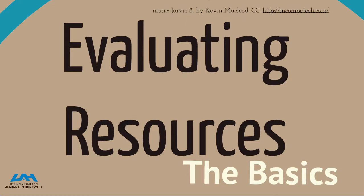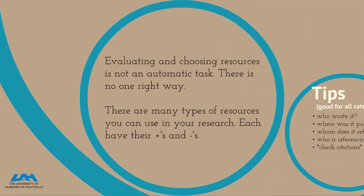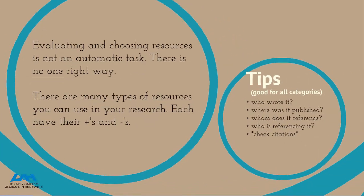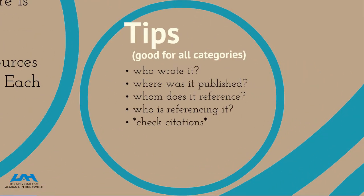Alright everybody, now we're going to take a look at evaluating resources. The big thing to remember is there's no one right way to do it — it's not an automatic task. There are many types of resources you can use in research and each have their pluses and minuses. Some general good tips though are: who wrote it, where was it published, who is referencing it, and always check the citations and check the sources.